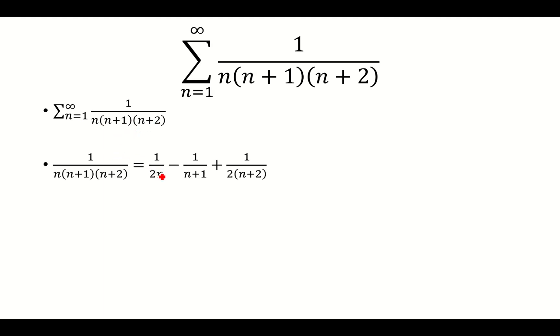When we do that, we get 1 over 2n minus 1 over n plus 1 plus 1 over 2 times n plus 2. We will switch spots, so the 1 over 2 times n plus 2 comes before the 1 over n plus 1.